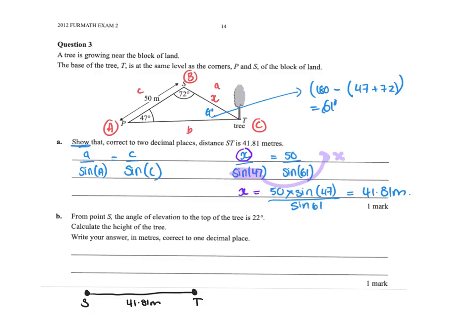From point S, the angle of elevation to the top of the tree is 22 degrees. We need to calculate the height of the tree correct to one decimal place. We have a right angle triangle with opposite h and adjacent 41.81. So: tan 22 equals h over 41.81. Using the calculator, h equals 16.9 meters.